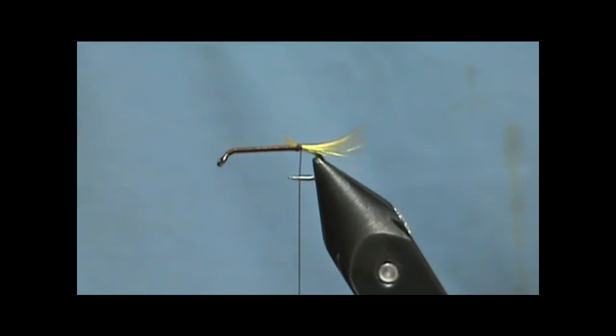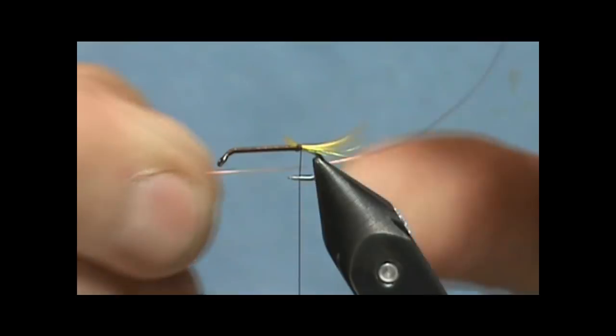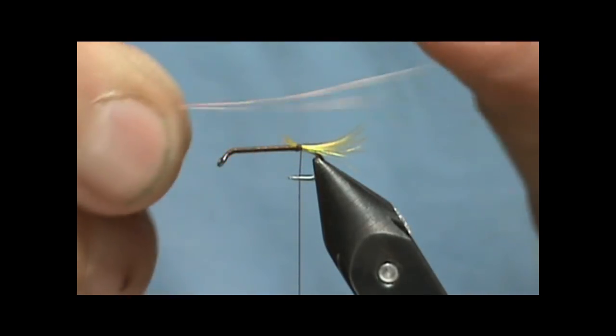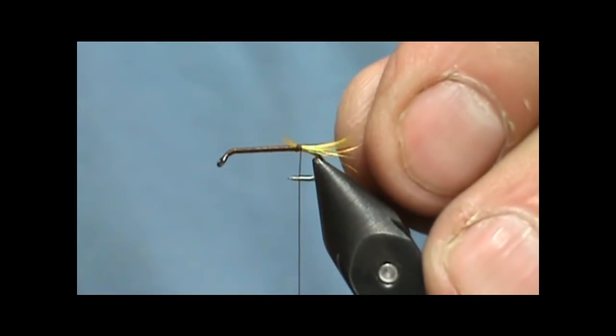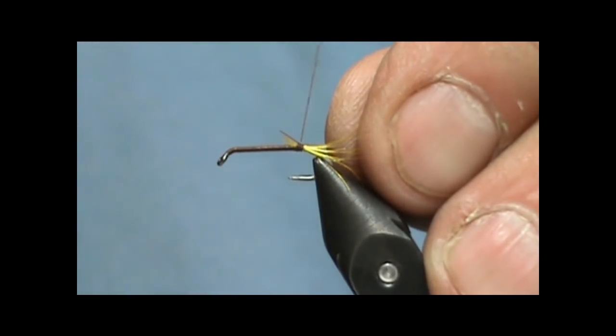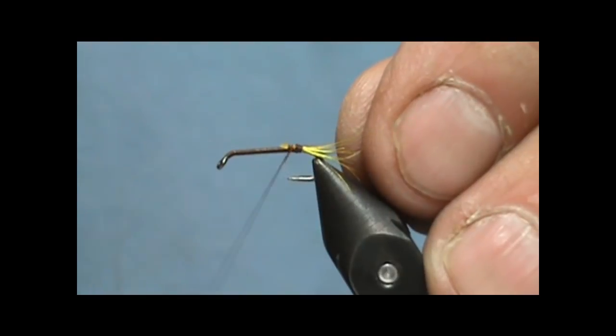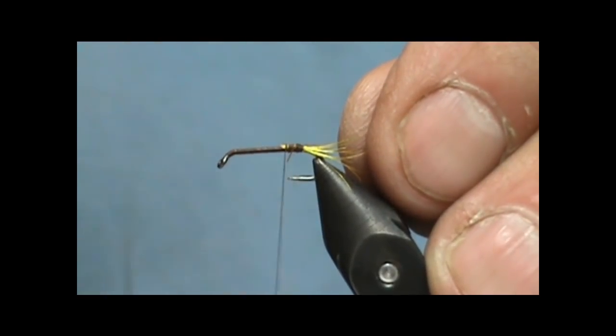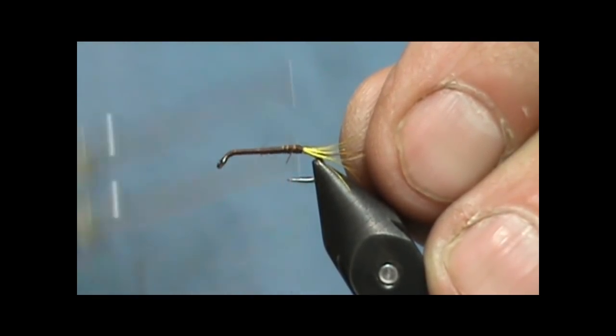Now the Prince nymph uses a tinsel for a rib. I like to use just a wire. I'm going to use a copper wire. You can use a stainless steel wire if you want silver. But I like to use a wire because I don't like to have all of that flash in there. I think it takes away from the peacock hurl.